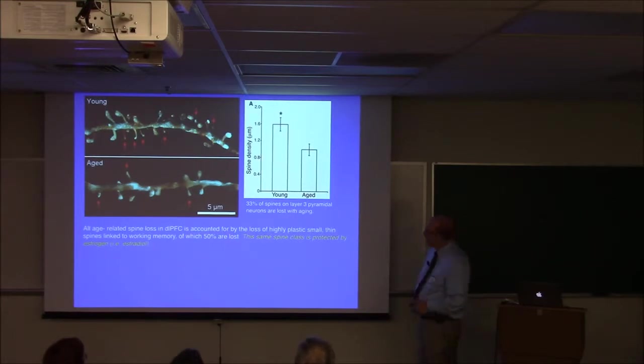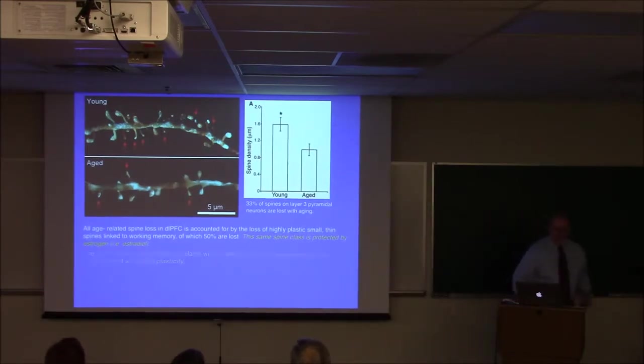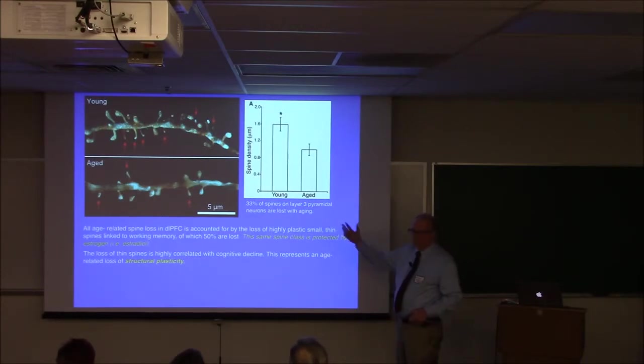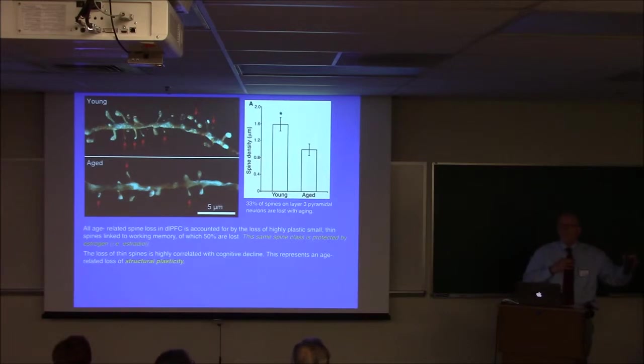But if you divide them into categories, it turns out that all of that loss is of thin spines. So 50% of the thin spines are lost. That same spine class, I'm not going to show the data today, is protected by estradiol. When we give a monkey that doesn't have circulating estrogen estradiol in a cyclical fashion, we can dramatically decrease the loss of these thin spines. The loss of those spines and the degree to which the monkey loses those spines, and I'm sure it's the same in human, is highly correlated with cognitive decline. Monkeys that retain this class of spines retain their cognitive performance and vice versa. So there's an age-related loss of what I would call structural plasticity. Remember I said proteins can move in and out of the synapse. That also is affected with age. But this is a loss of structural plasticity.